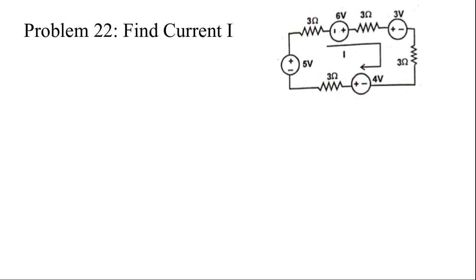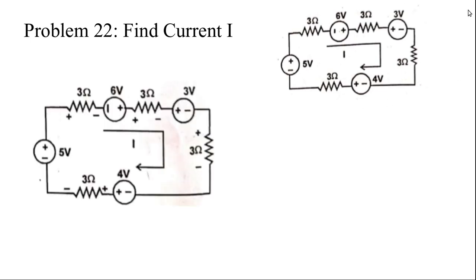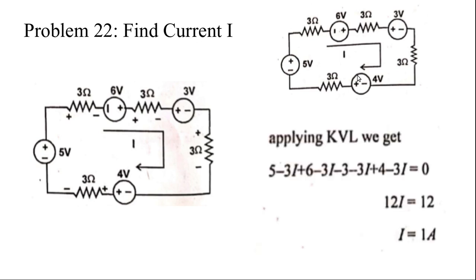Next, find current I from this circuit. Same as before — this is the circuit. I have just marked the plus/minus signs. You can apply KVL: this is plus 5, minus 3i, then plus 6, minus 3i, then plus 2, minus 2, minus 3. This is plus, so this is minus 3i. If you simplify this, you will be getting 12i is equal to 12.